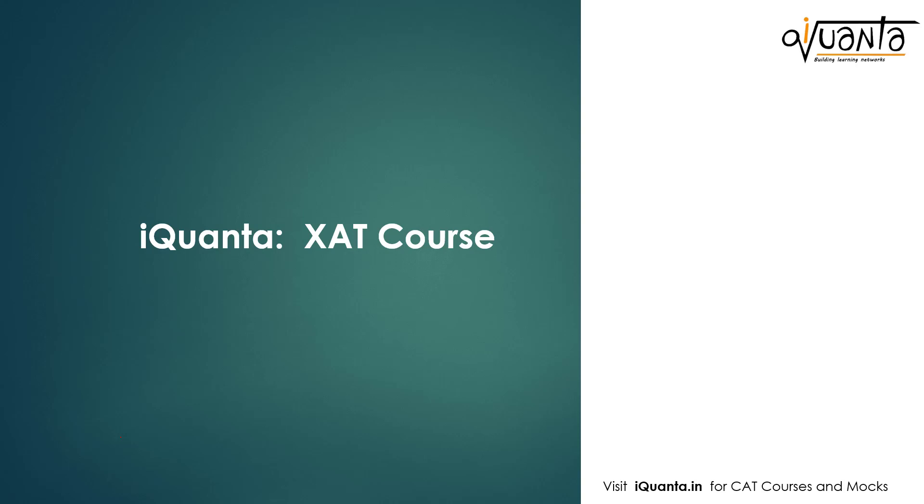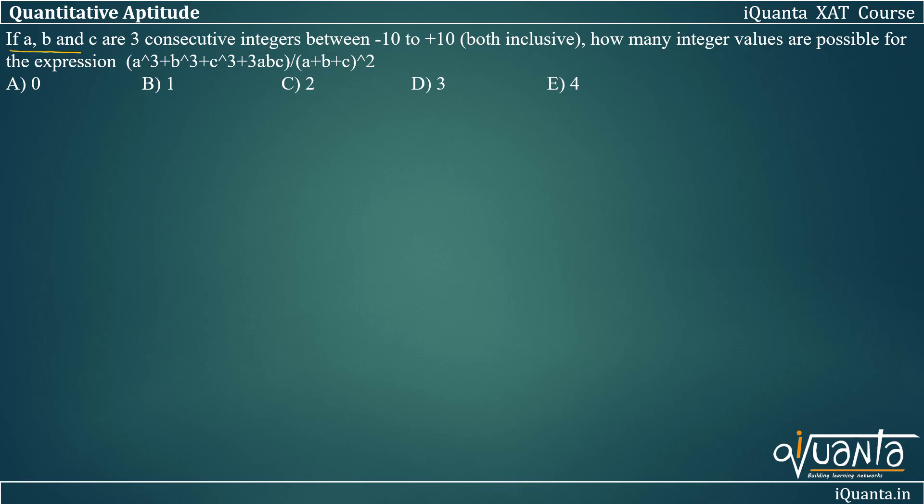Hello everyone, let's solve another algebra question from past papers. If A, B, C are three consecutive integers between -10 to +10 both inclusive, how many integer values are possible for the expression (A³ + B³ + C³ + 3ABC) / (A + B + C)²?